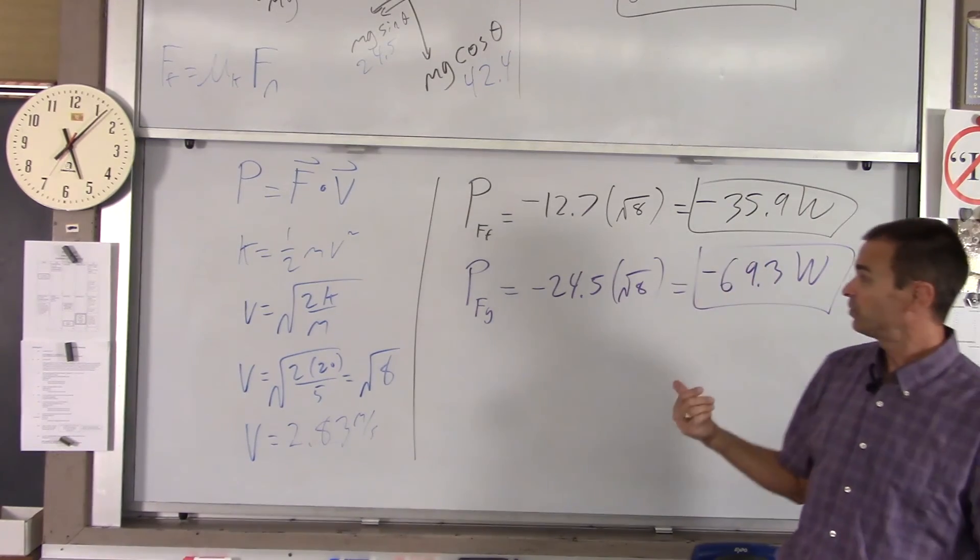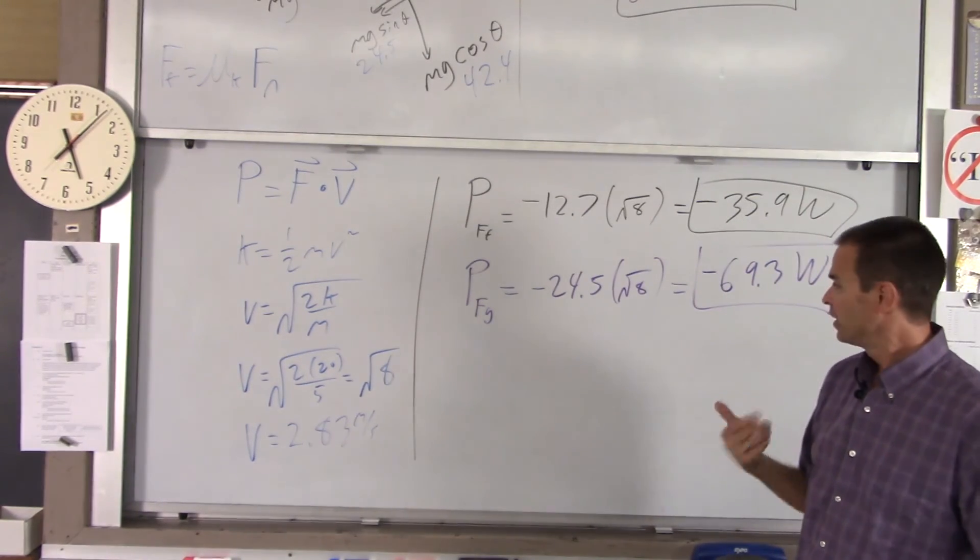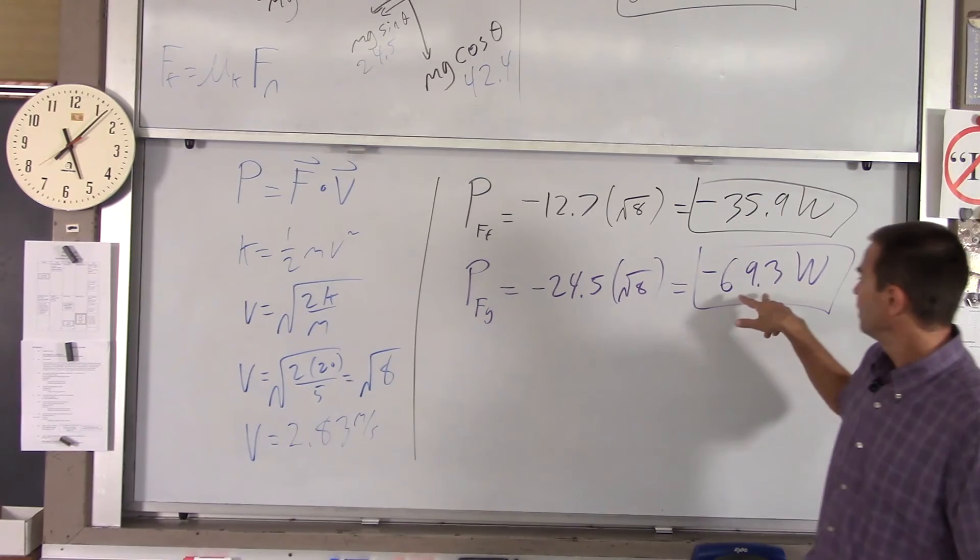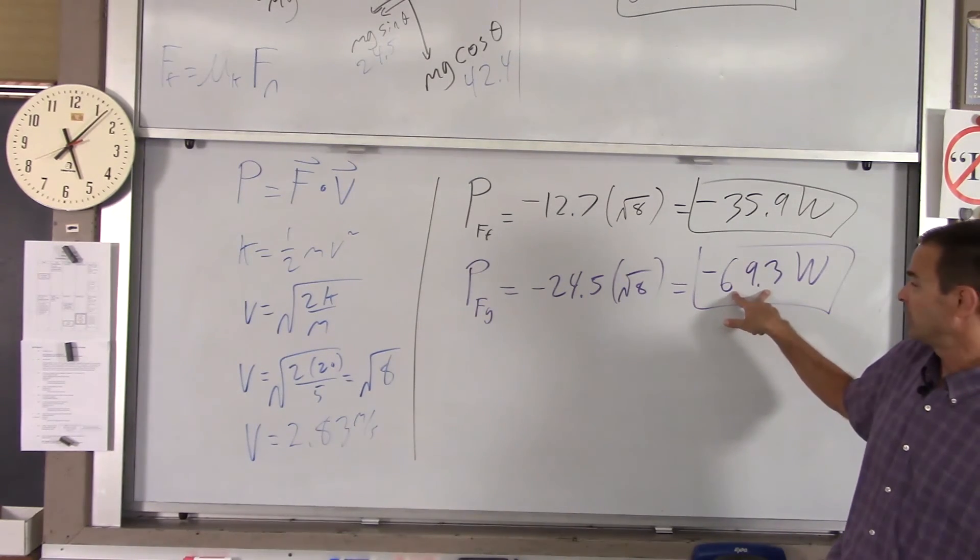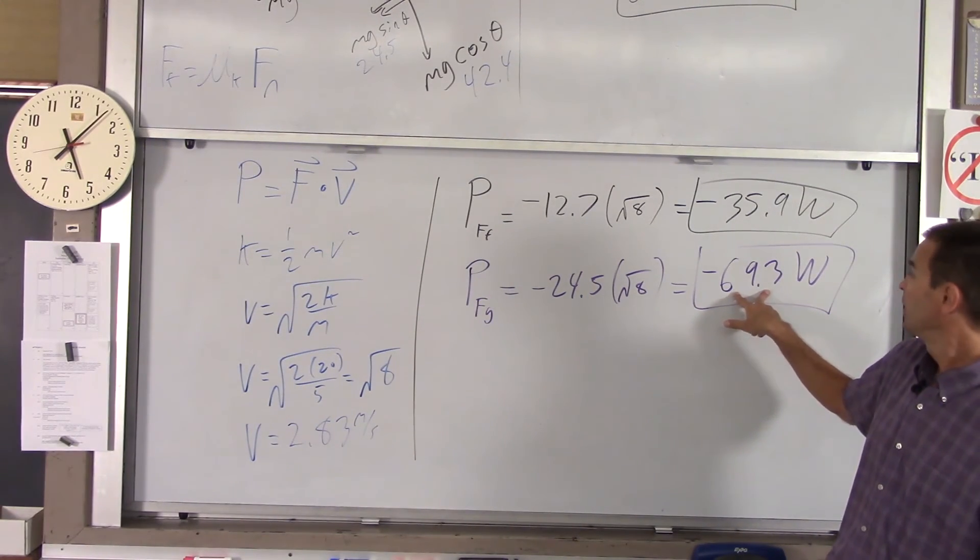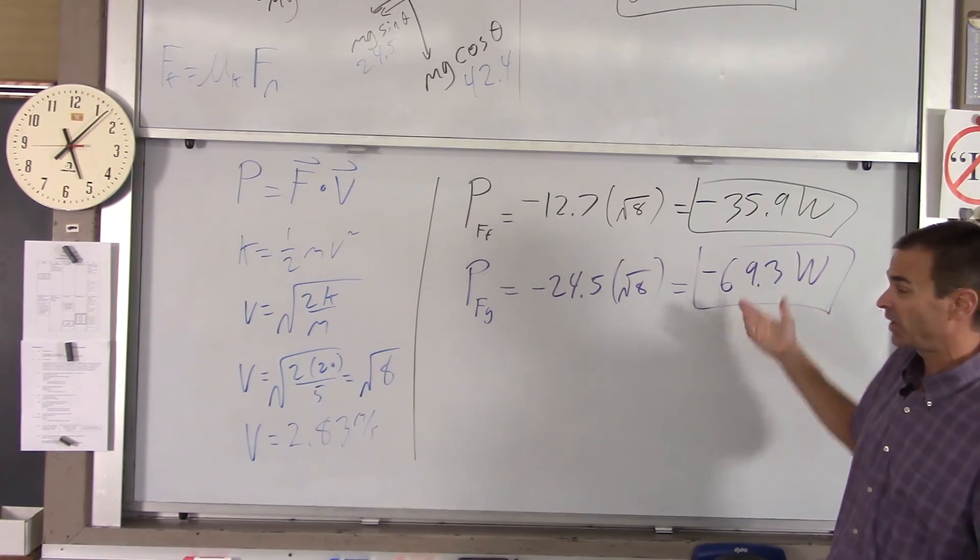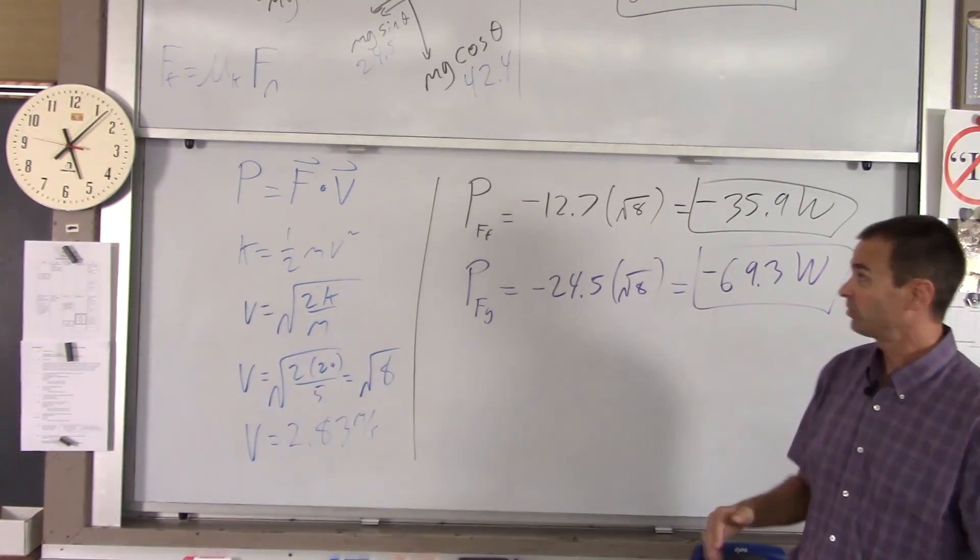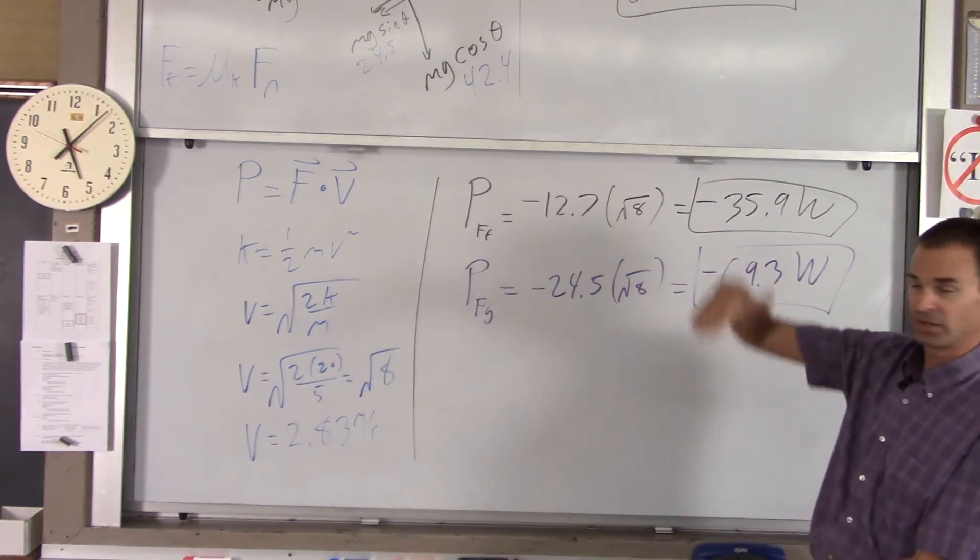Now, what each force is doing with that energy is different. Gravity is converting the energy from kinetic energy into potential energy. So, this 69.3 joules per second is turning into potential energy, energy of position, or in this case, energy of height.